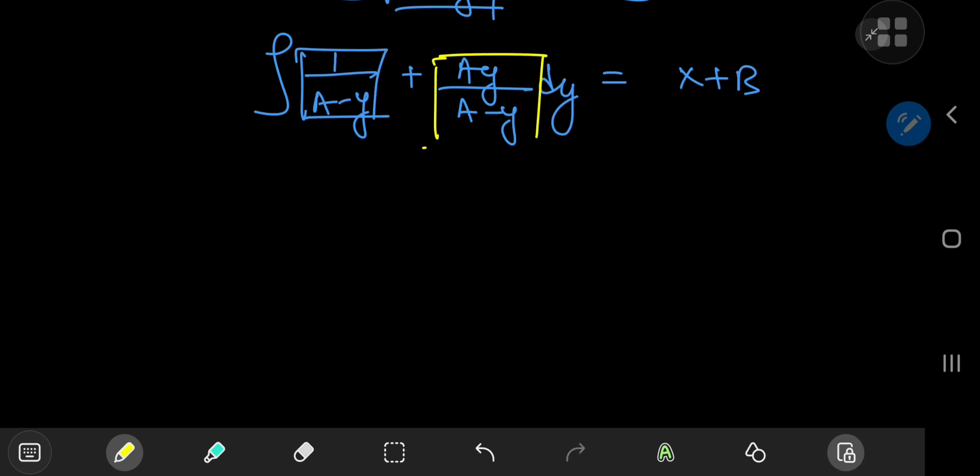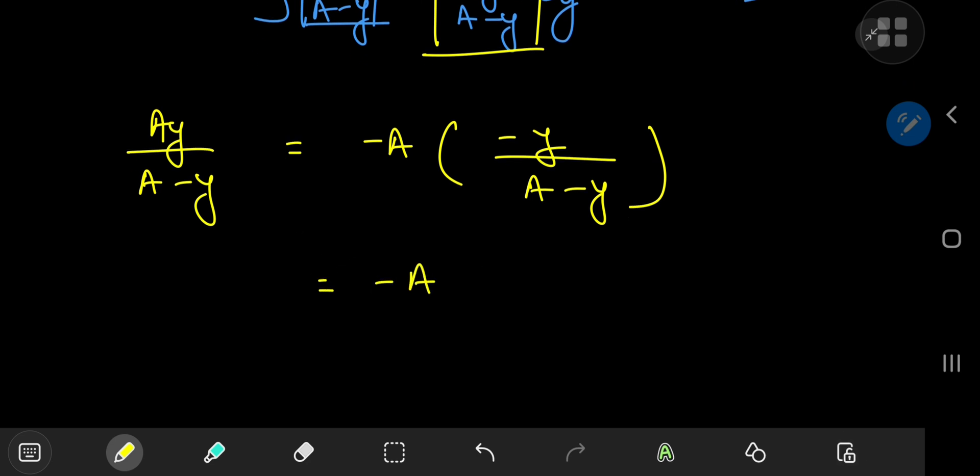So what we have is a times y divided by (a - y). And judging by the structure of the denominator here, we could use a couple of extra negative signs. Yeah, that would be cool. And there's never any harm in adding a 0. But what special version of 0 do I want to add to my numerator? Well, the version of 0 that will work nicely is a minus a.